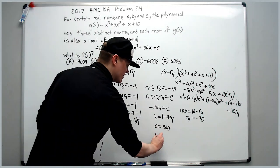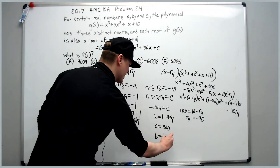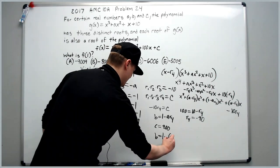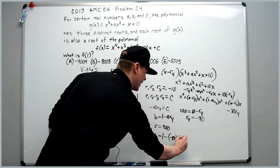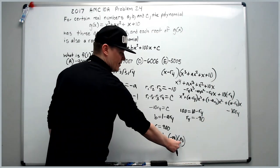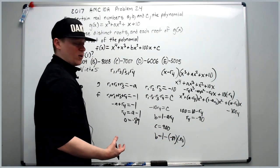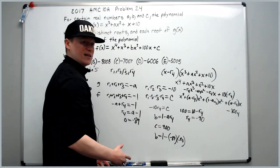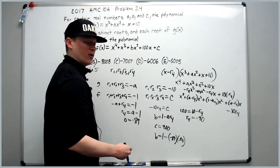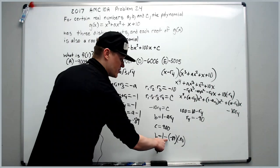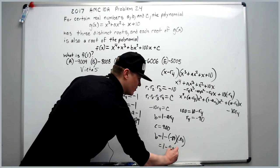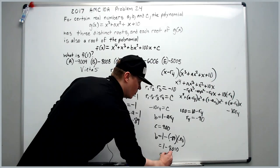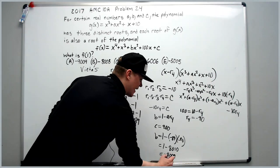We get b. b is equal to 1 minus a. a is negative 89 and r4 is negative 90. Multiplying these two. 90 squared is 8100, so 89 times 90 will be 90 less than that, or 8010. There's three negative signs, so it becomes 1 minus 8010, which is equal to negative 8009.